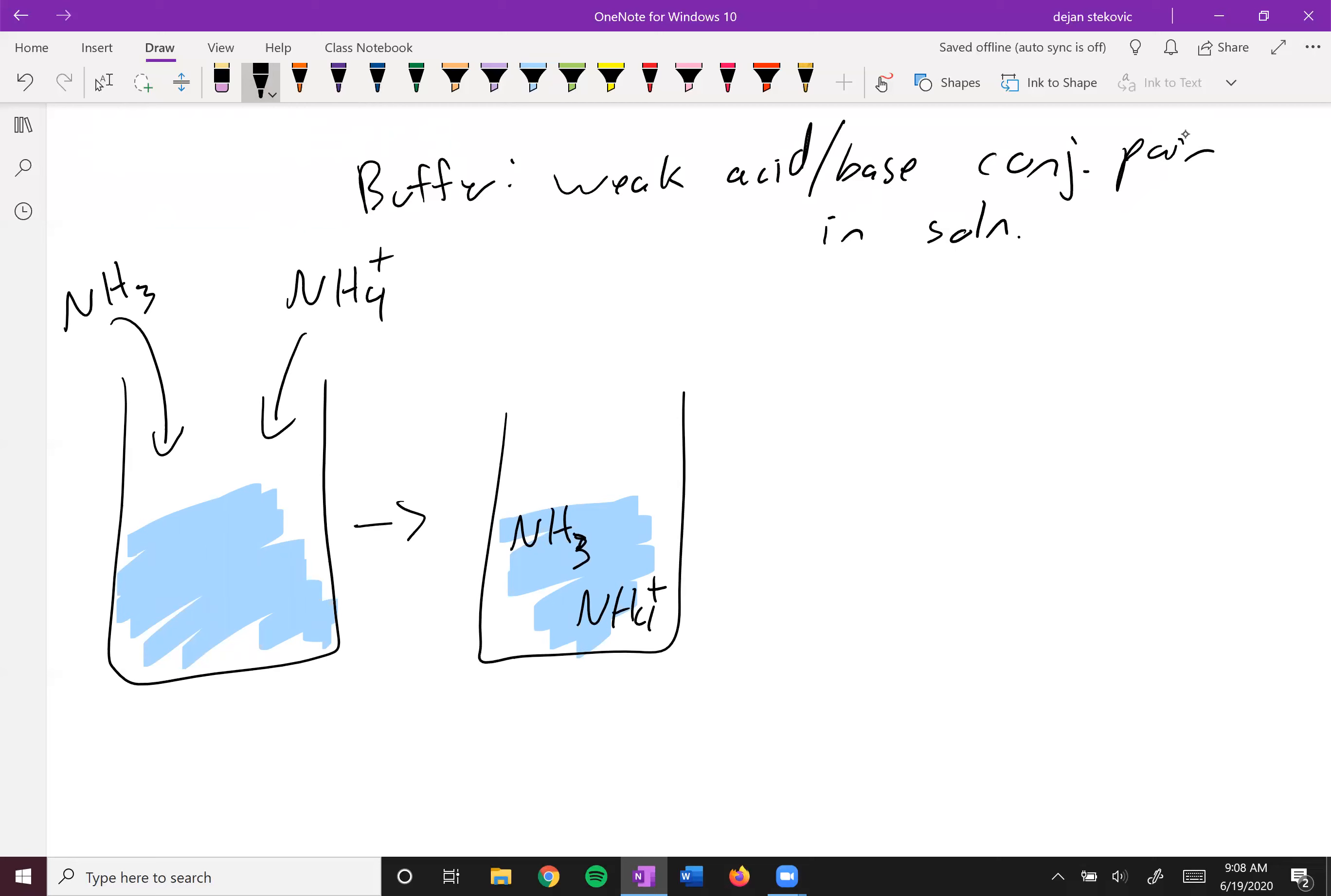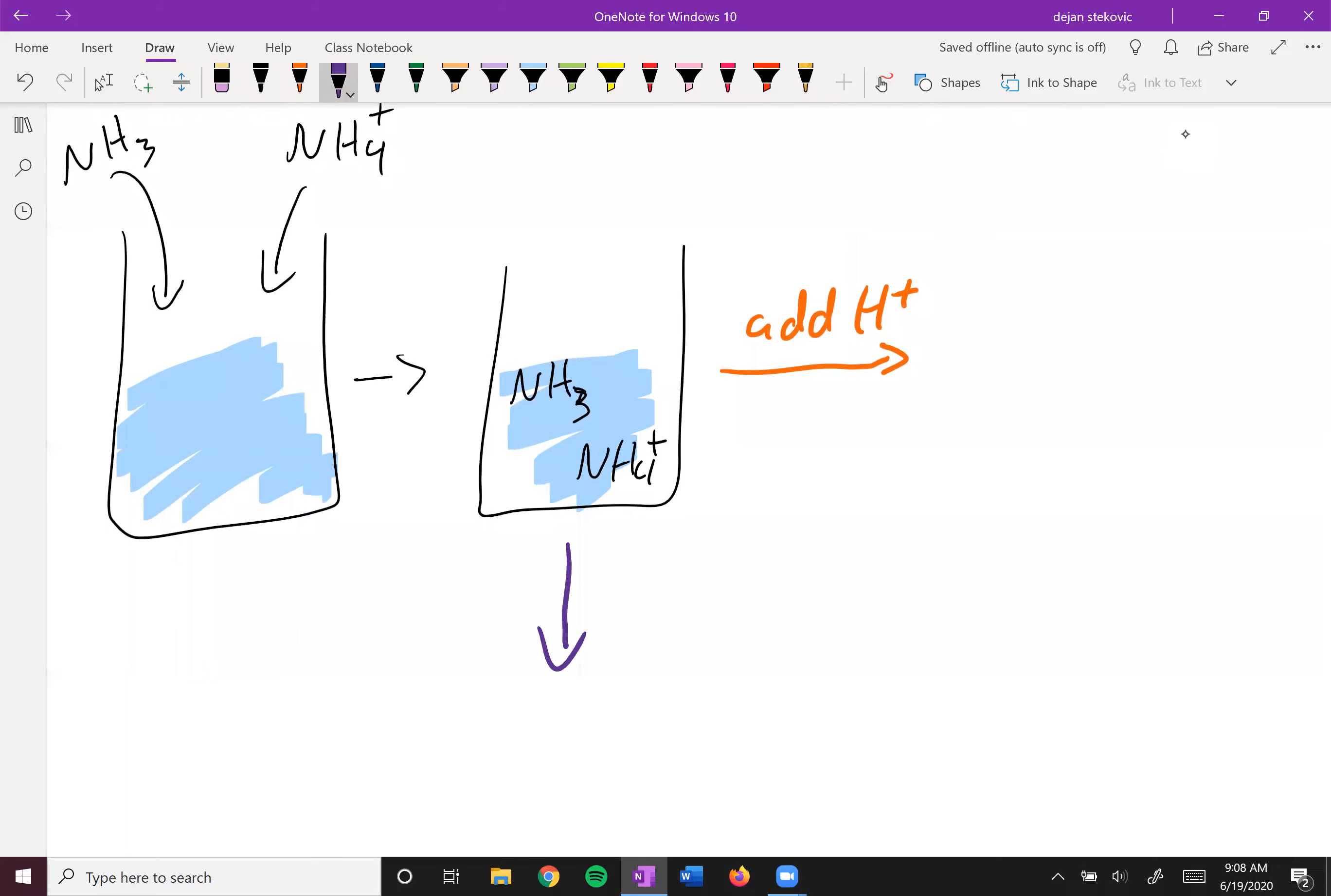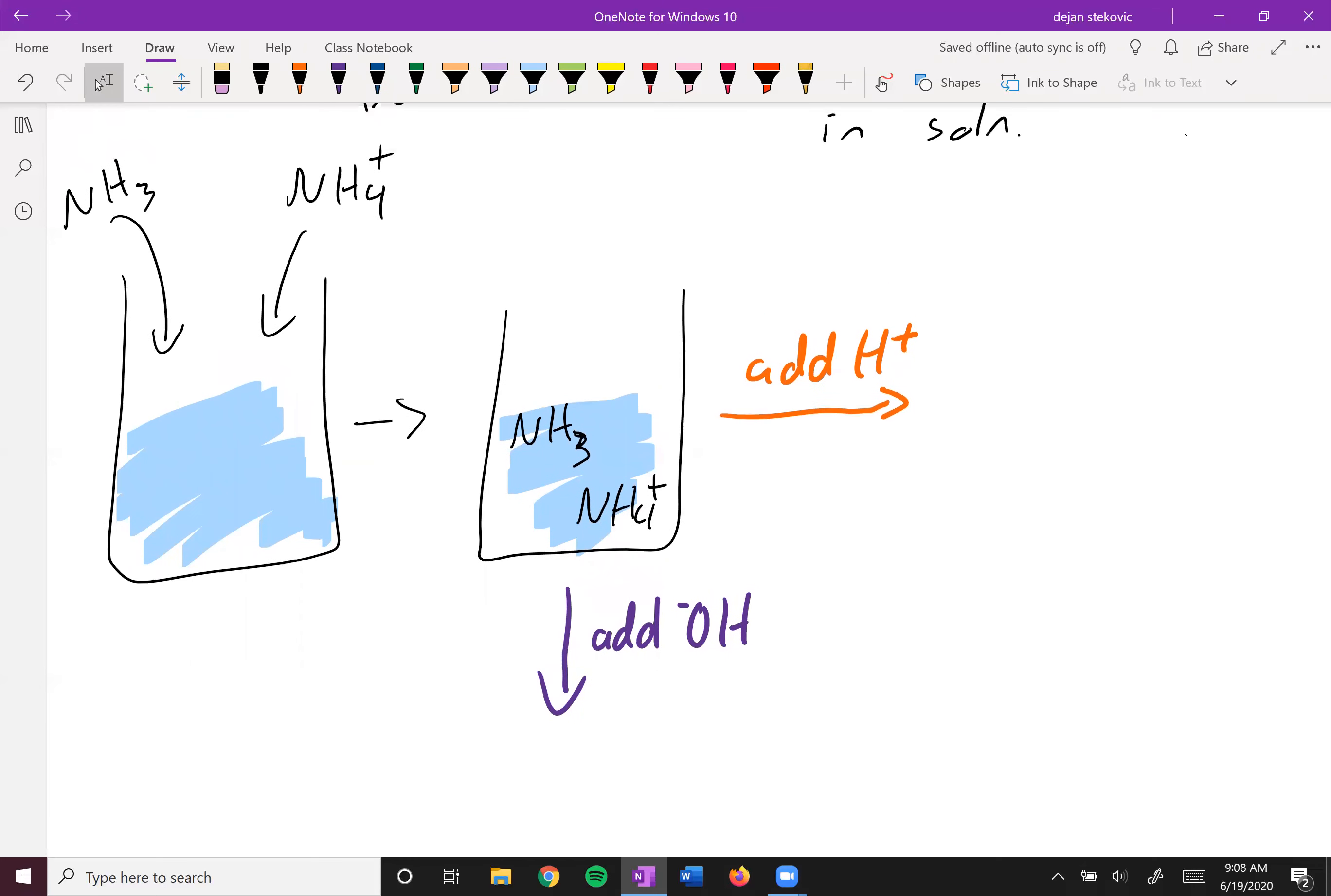And so we could think about adding some acid to it, or we could think about adding some base to it. Now in pure water, this acid or base would directly interact with the water, changing the concentration of hydronium or hydroxide and thus changing the pH.